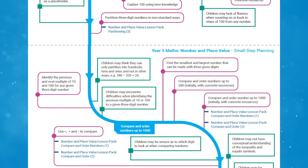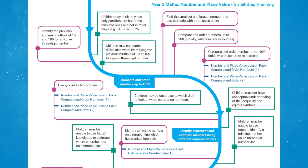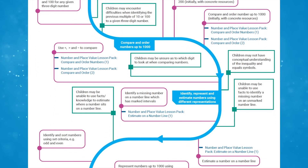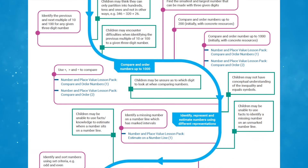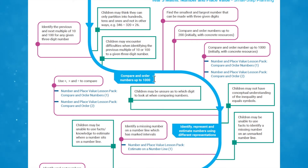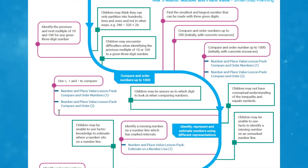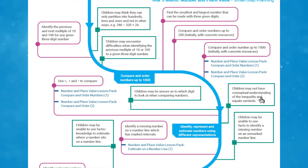Following the path along the S-Plan, you'll see that the blue, pink, and green boxes — the learning intention, the skill required to progress, and the potential misconceptions — connect well to support your teaching. For example, if you are teaching children to compare and order numbers up to a thousand, they need to be able to compare and order numbers up to 200 initially with concrete resources, and use greater than, less than, and equal to symbols to compare. Your learners may be unsure which digit to look at when comparing, or may not have conceptual understanding of the inequality and equal symbols, so you might click on the green misconception boxes where you'll find a link to the same day intervention resource where children can complete these intervention activities.